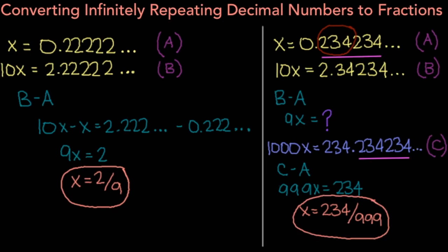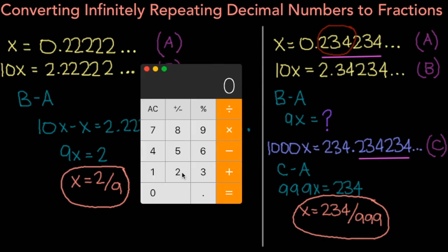Now just like with the last problem, let's use a calculator to verify that we have done this conversion successfully. If we plug in 234 divided by 999, we should get 0.234234 and so on. And when we perform the division, we do, so we know we have performed the conversion successfully.